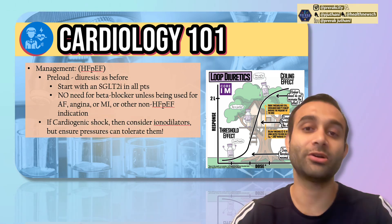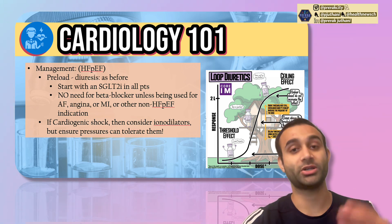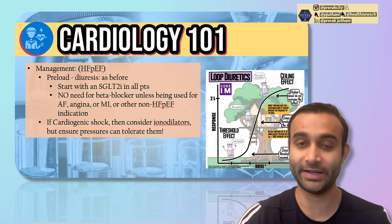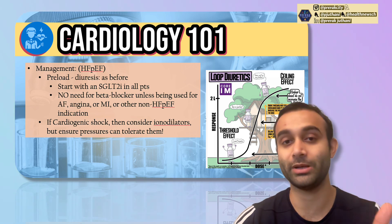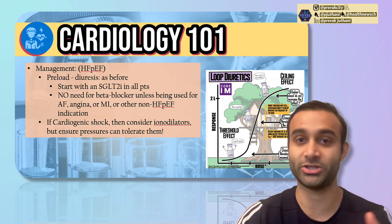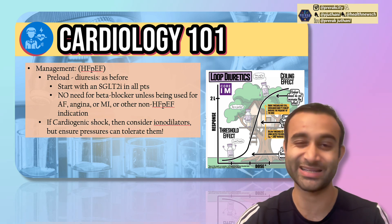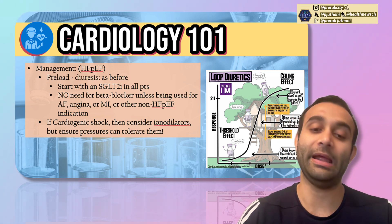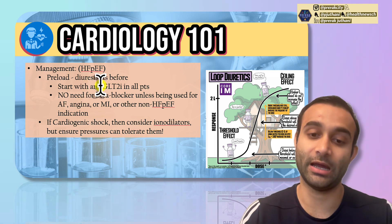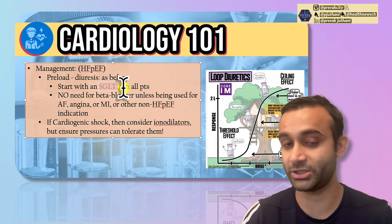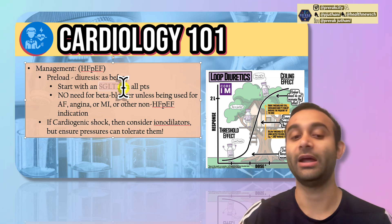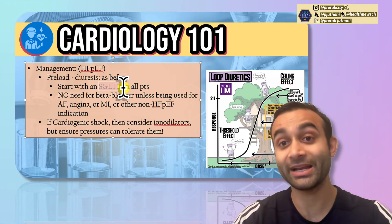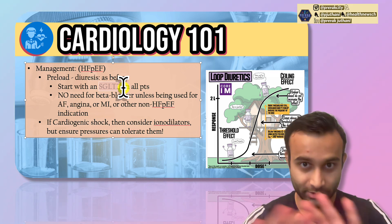For heart failure with preserved ejection fraction, there are still certain medications you want to get the patient on. There's a Class 2A indication for an SGLT2 inhibitor, and a Class 2B recommendation for a mineralocorticoid receptor antagonist like spironolactone, as well as an ARNI if possible. Always start with an SGLT2 inhibitor once you get the volume off, and then consider adding a mineralocorticoid receptor antagonist or an ARNI, but you often don't need a beta blocker for HFpEF.